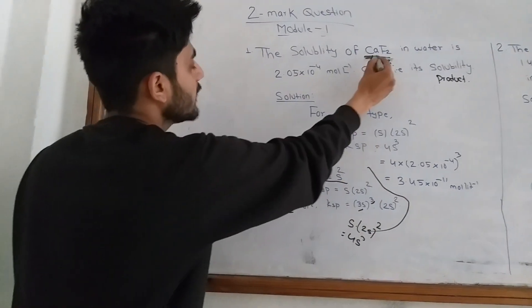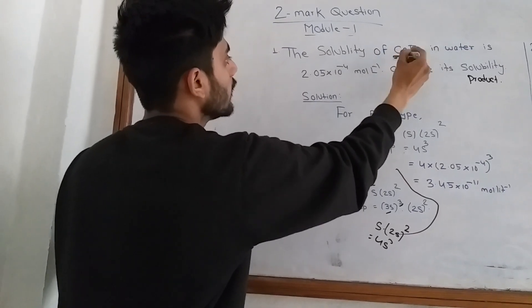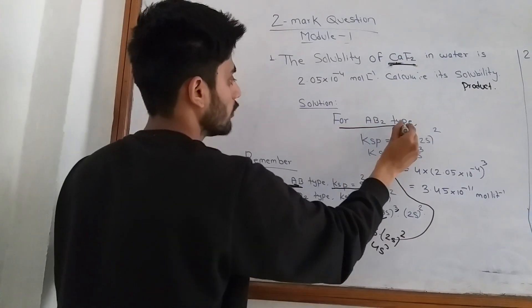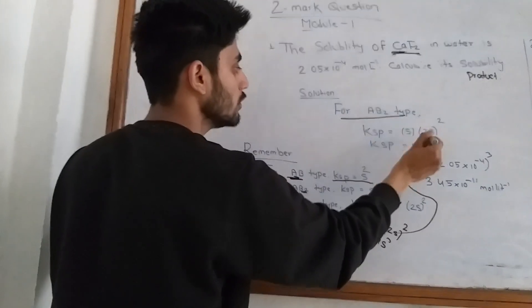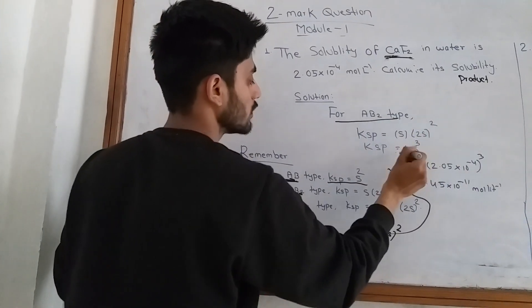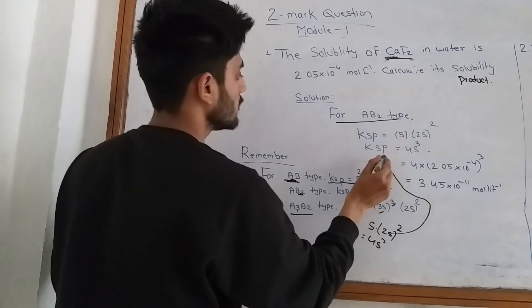This is CaF2. This is AB2 type. For AB2 type, KSP is equal to S into 2S squared, which equals 4S cubed. This is the KSP value.